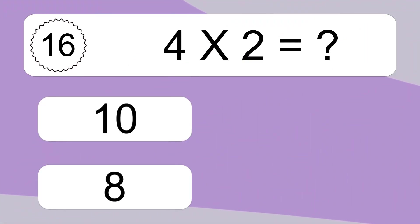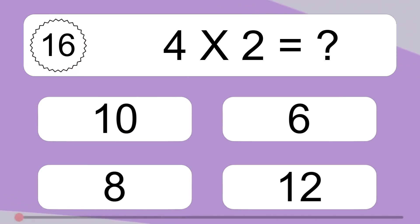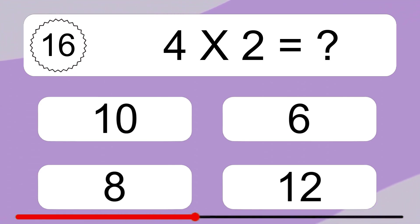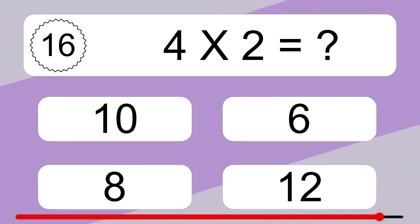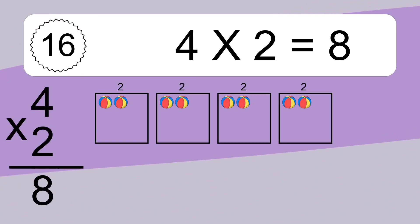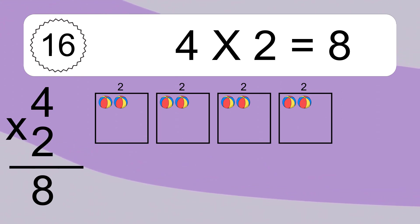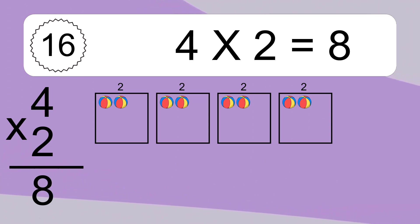4 times 2 equals what? 4 times 2 equals 8. We have 4 boxes, and each box has 2 colorful balls inside. If you count all the balls in all the boxes together, you will have 4 times 2 balls. This equals 8 balls.